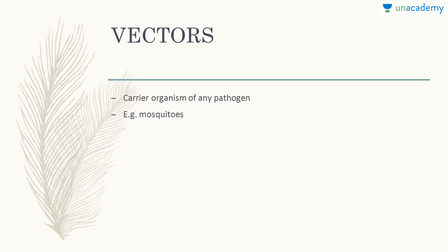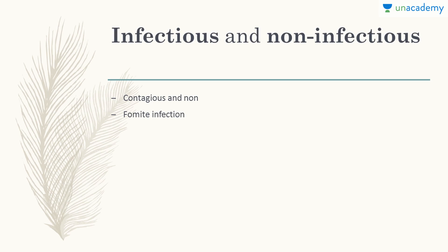Next is the concept of vectors. We discussed molecular vectors in the biotechnology unit — the ones that carry foreign DNA. Here, vectors mean the ones who carry the pathogen. Vectors are vehicles that carry the pathogen from one place to another. For example, the female Anopheles mosquito transfers Plasmodium into the human body. So Plasmodium is the pathogen and female Anopheles is the vector.